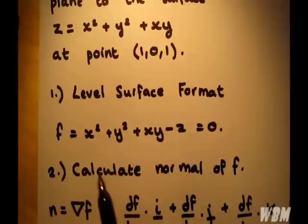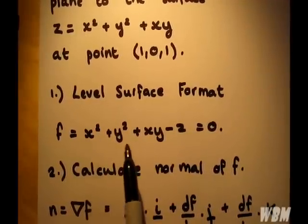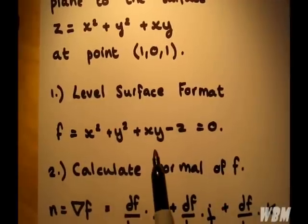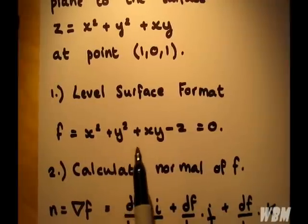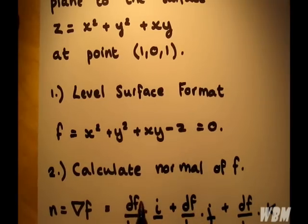Now if we differentiate this first with respect to x, we end up with 2x plus y. If we differentiate it with respect to y, we end up with 2y plus x. And finally, with respect to z, we simply end up with minus 1.